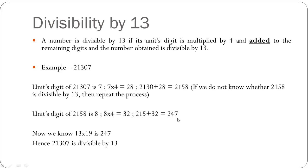If you didn't know whether 247 is divisible by 13, you could repeat the process again and further break down the number to verify. But for those who know that 13 times 19 is 247, you can stop at this step and confirm that 21307 is divisible by 13.